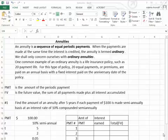Weekly, semi-annually, anything we want. When the payments are made at the same time that the interest is credited, the annuity is termed ordinary and we're only going to concern ourselves with an ordinary annuity.